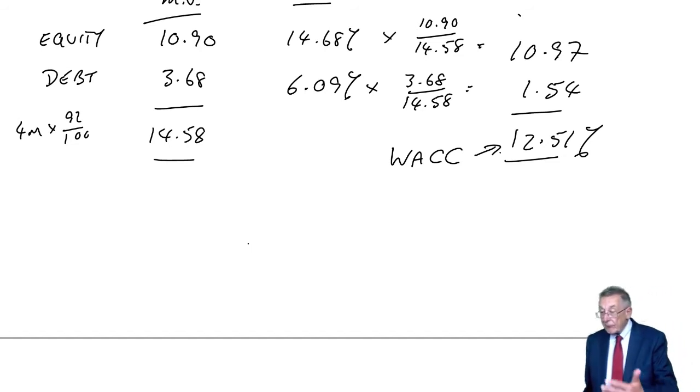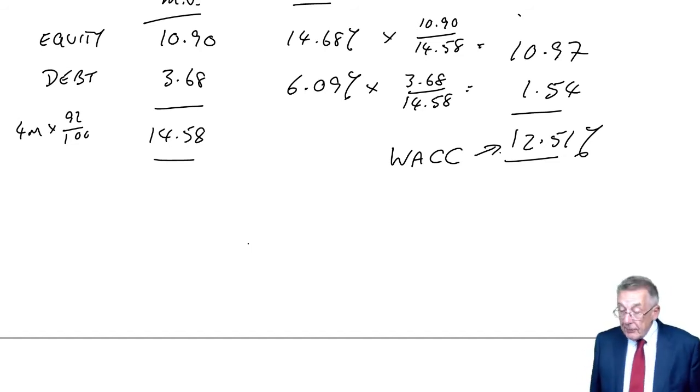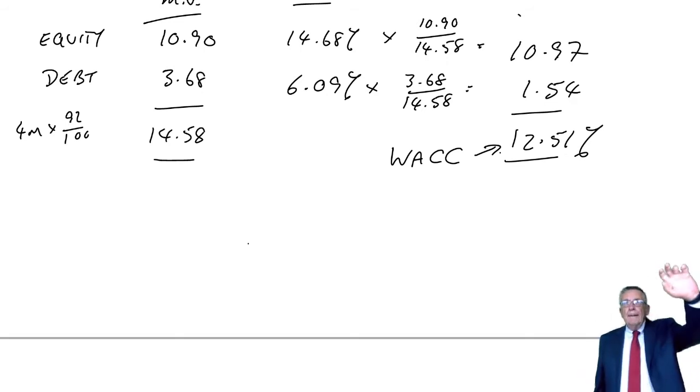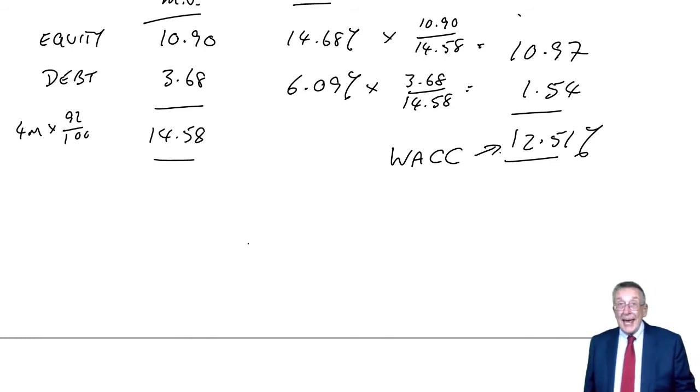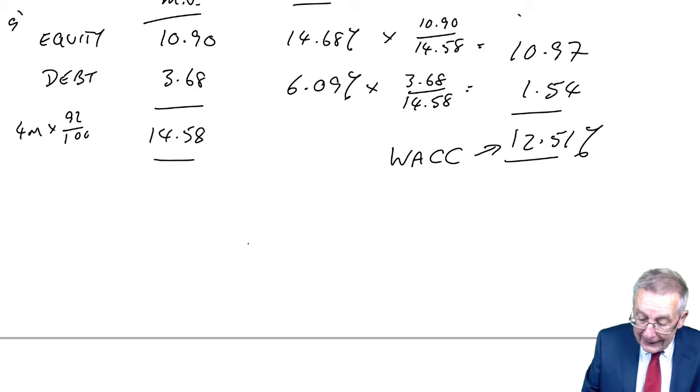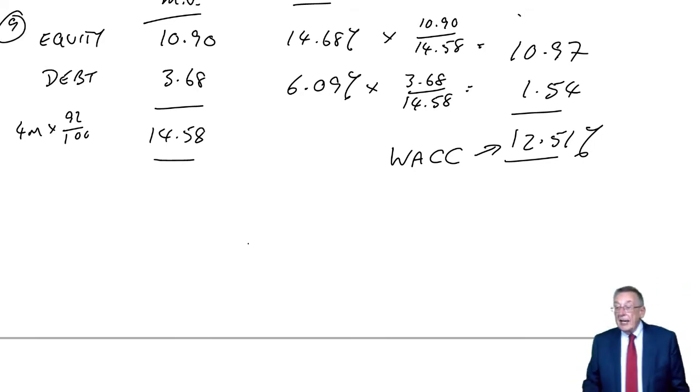Now I'll talk about the relevance of that later, shortly. But arithmetically for the moment, it couldn't really be much easier. Cost of equity, cost of debt, we've been through the rules. The weighting by the total ex div ex interest market values.